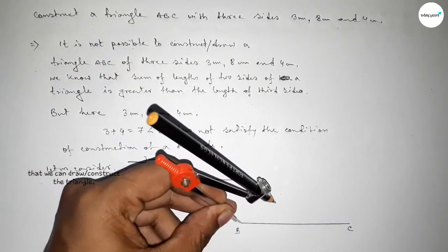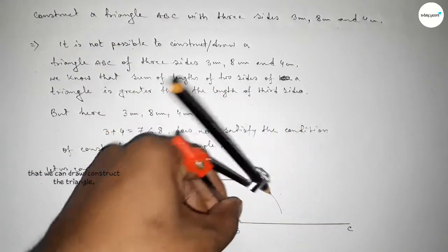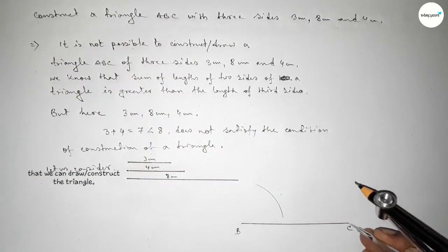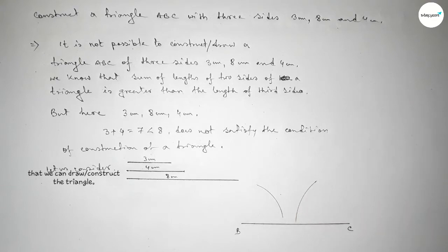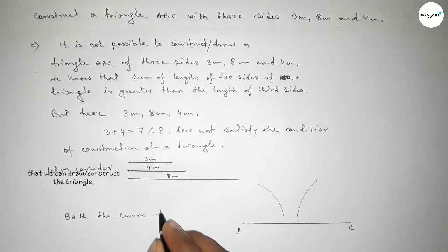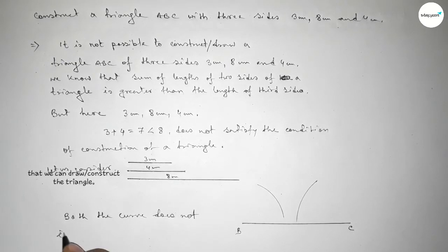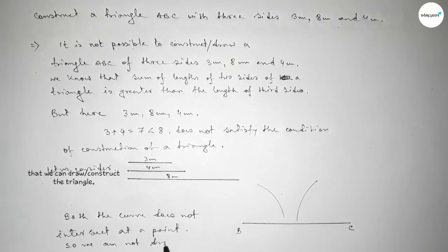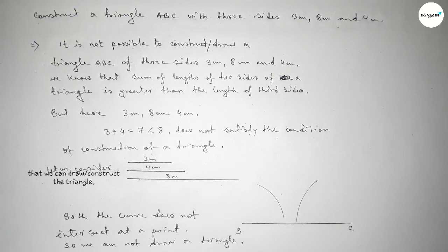Taking the length of three centimeters using a compass, placing the compass on point C and drawing an arc, we can see that both curves do not meet or intersect at a point. Therefore, we cannot construct a triangle with sides three centimeters, eight centimeters, and four centimeters. Thanks for watching, please share it.